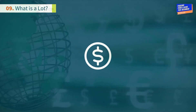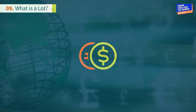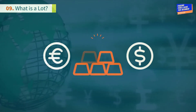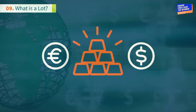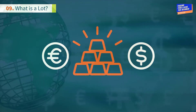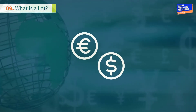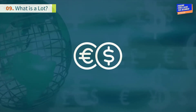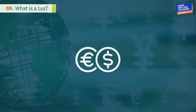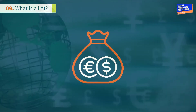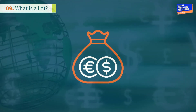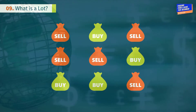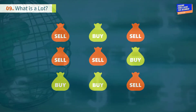Now that we understand a little more about currency pairs and how their value is derived, let's talk about how they are traded. Currency pairs are traded in what we call lots. A lot is the amount of the currency pair that you're buying or selling.